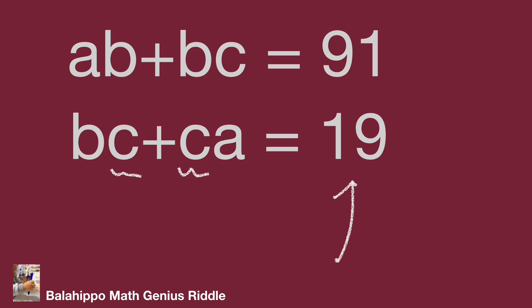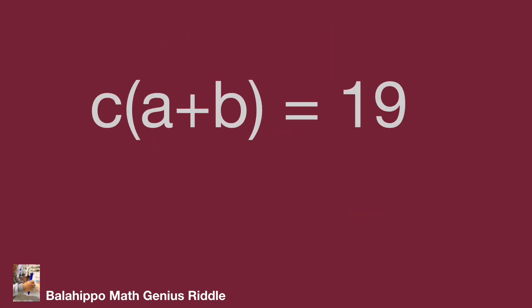The right side number is 19, which is a prime number. So I rewrite the second equation as c(a + b) = 19. Since 19 is prime, c times (a + b) equals two numbers multiplied, only 1 times 19.